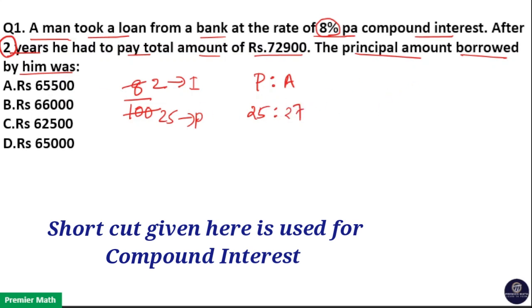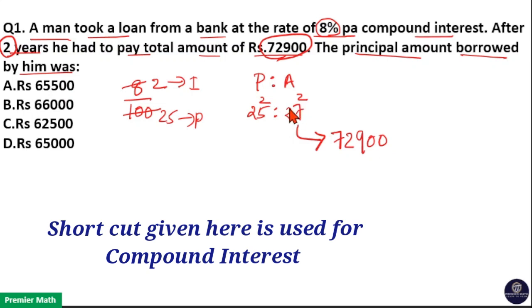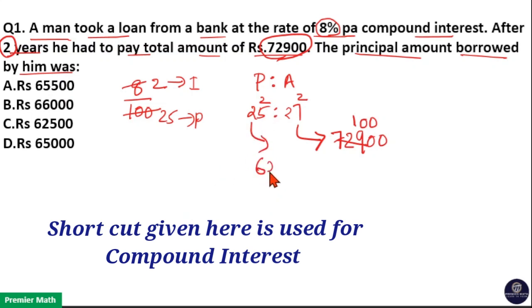Here it is for 2 years, so 25 squared to 27 squared. This 27 squared part is the total amount received in 2 years, which is equal to 72,900. So 27 squared part equals 72,900. Here, 27 squared is 729. So 729 goes one time in 729, meaning one part is equal to 100. Then 25 squared means 625. So 25 squared parts equals 625 into 100. Therefore, the principal is option C, that is Rs. 62,500.